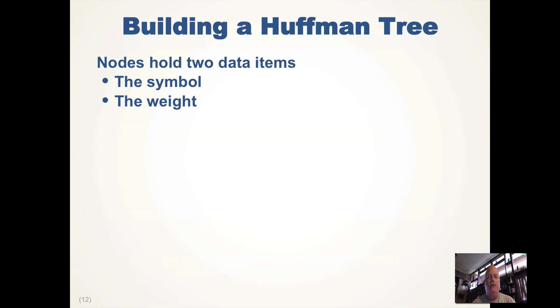So how do we build a Huffman tree? Our binary tree node now needs to keep two pieces of information: the symbol and the weight of the tree that exists. The weight of each root node will be the sum of the two left and right subtrees.